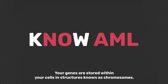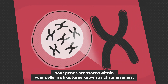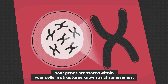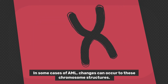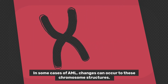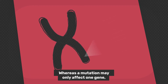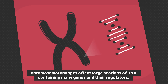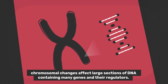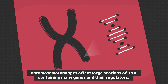Your genes are stored within your cells in structures known as chromosomes. In some cases of AML, changes can occur to these chromosome structures. Whereas a mutation may only affect one gene, chromosomal changes affect large sections of DNA containing many genes and their regulators.